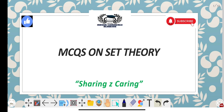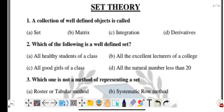Hello students, once again welcome to you all with another video on MCQs on set theory. So without wasting any time, let's start with question number one: a collection of well-defined objects is known as — what is it called?